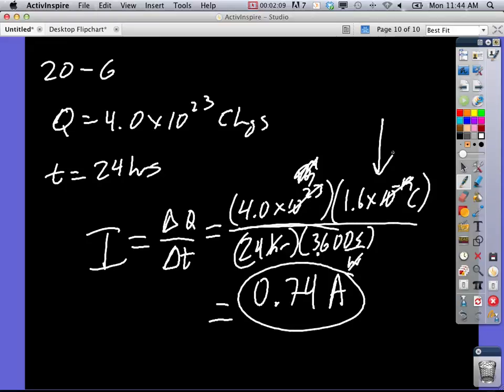Yeah, remember, the charge, QE, an electron's charge is 1.6 times 10 to the minus 19 coulombs. Actually, it's negative that.